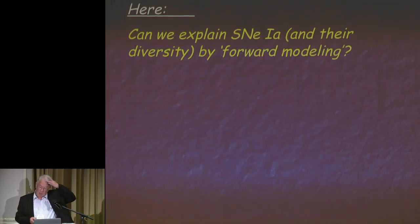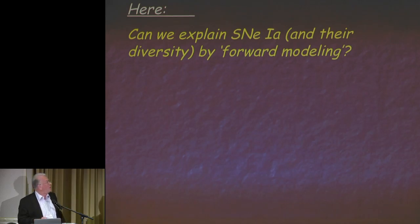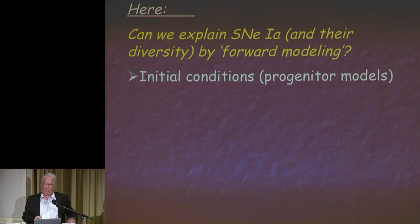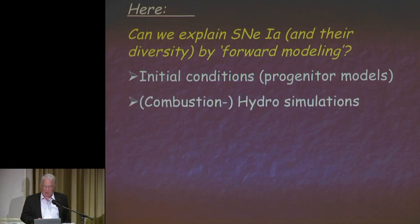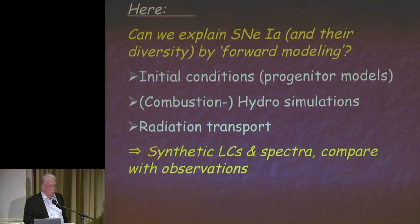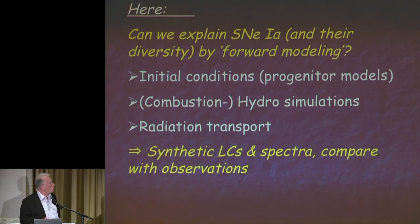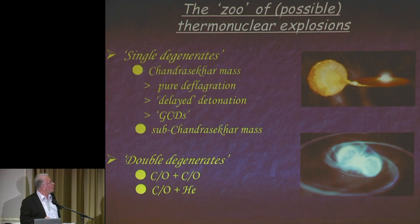The question I'm going to address is: can we explain the Type Ia's by forward modeling? That is, we take initial conditions in the progenitor model, we take combustion hydro simulations, radiative transfer, and then compute synthetic light curve spectra and compare with observations. Can we do that?